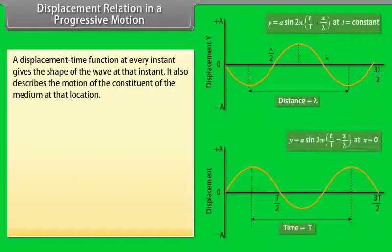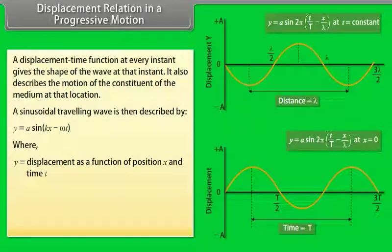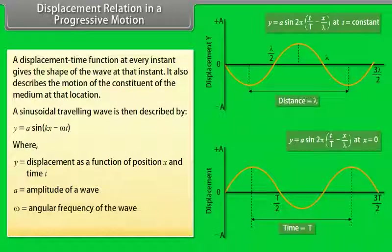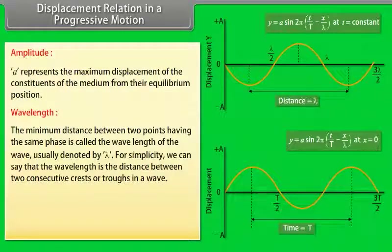Displacement relation in a progressive motion: A displacement-time function at every instant gives the shape of the wave at that instant. It also describes the motion of the constituents of the medium at that location. A sinusoidal traveling wave is described by y = a sin(kx − ωt), where y is displacement as a function of position x at time t, a is the amplitude of the wave, ω is the angular frequency, and k is the angular wave number. Amplitude A represents the maximum displacement of the constituents of the medium from their equilibrium position. Wavelength: The minimum distance between two points having the same phase is called the wavelength of the wave, usually denoted by lambda (λ).